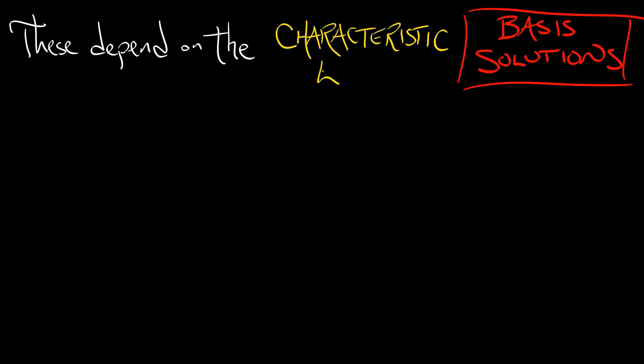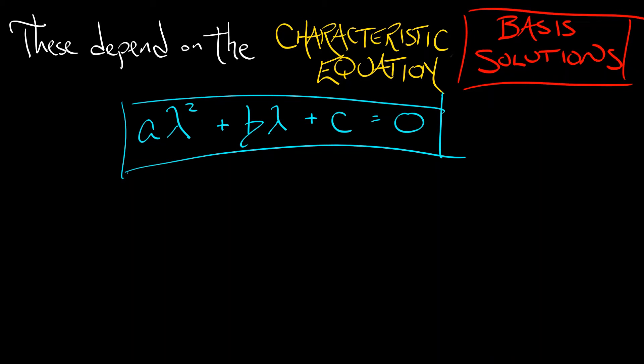Now, what's the deal with these basis solutions? Well, these depend on something called the characteristic equation. The characteristic equation for this second-order linear ODE is a lambda squared plus b lambda plus c equals zero, and everything depends on the roots of this characteristic equation. Now, you're probably thinking, why are you using lambdas here? Stay tuned.